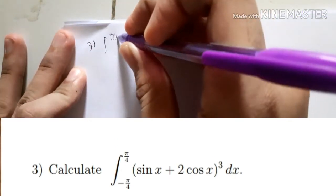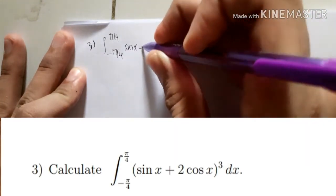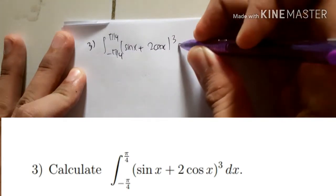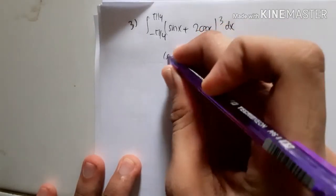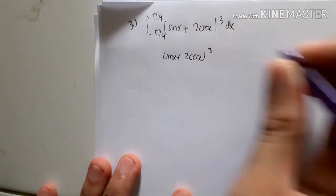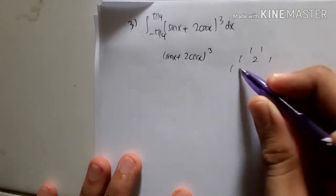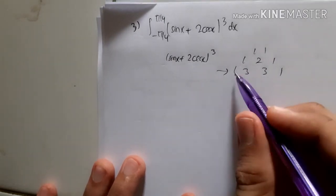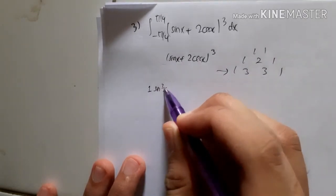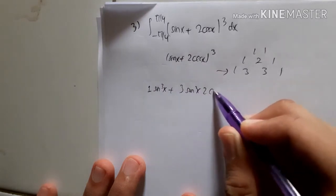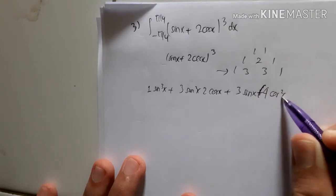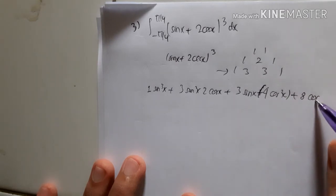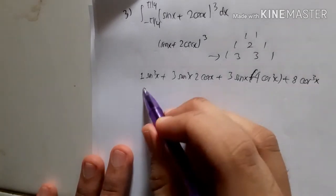Number three: the integral from −π/4 to π/4 of (sin x + 2cos x)³. To expand this, we use the binomial coefficients from Pascal's triangle (third row: 1, 3, 3, 1), giving: sin³x + 3sin²x·(2cos x) + 3sin x·(4cos²x) + 8cos³x.